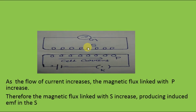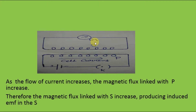In the circuit diagram, P and S are two coils placed close to each other. P is the primary coil, connected to a battery through a key K. S is the secondary coil, connected to a galvanometer G. On pressing key K, the current in P starts increasing from 0 to a maximum value, and current flows in the primary circuit.